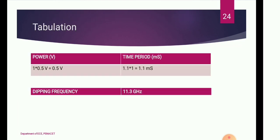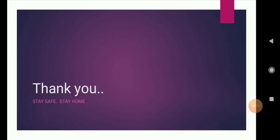The dipping frequency measured in this experiment is 11.3 GHz. We hope you have understood the characteristics of the Gunn oscillator and how to determine the threshold voltage. Thank you.